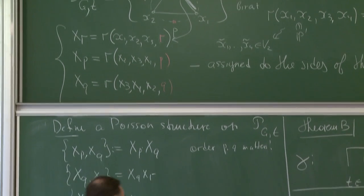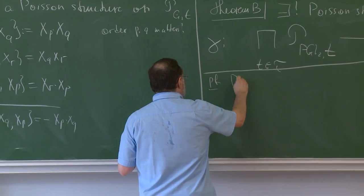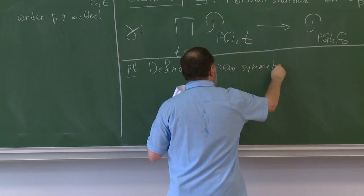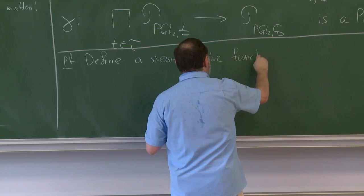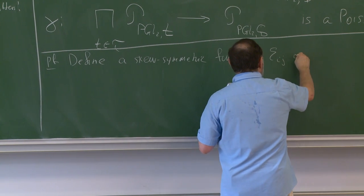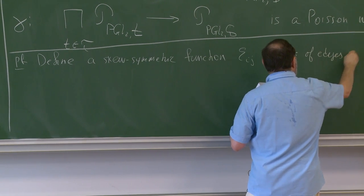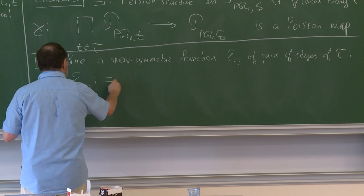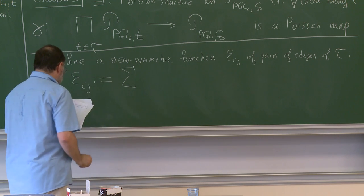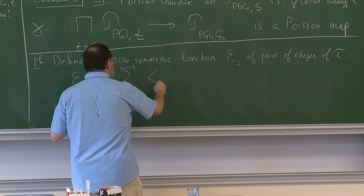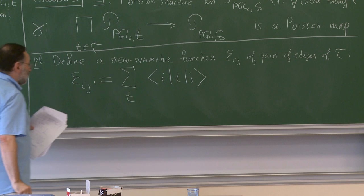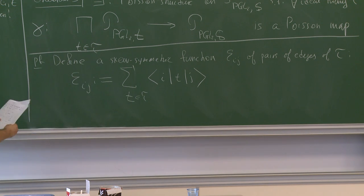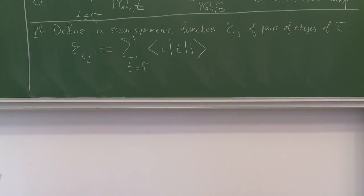We define a skew-symmetric function epsilon_{ij} for pairs of edges of the triangulation tau as follows. The Poisson tensor is given by the sum over all triangles T of the symbol [i, T, j], which takes values +1 if i and j are sides of triangle T going counter-clockwise, -1 if they go the opposite way, and 0 otherwise. Thus epsilon_{ij} can take values 0, ±1, or ±2.